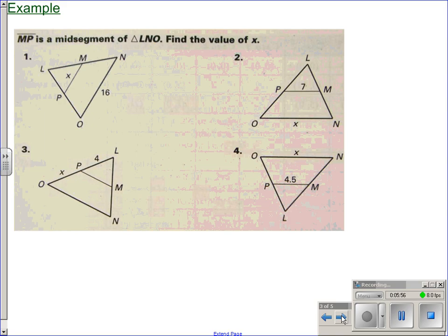Just a couple quick examples here. The segment MP is a midsegment of triangle LNO, find the value of X. In this number one, X is the length of the midsegment. It's half the third side. So, half of 16 is 8.